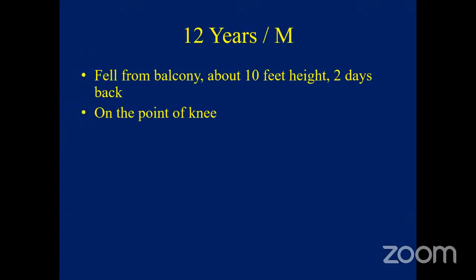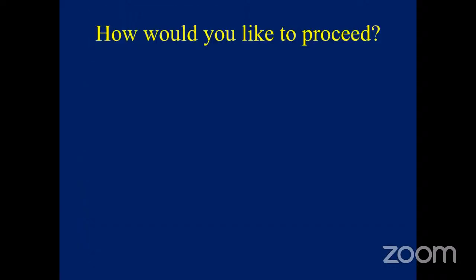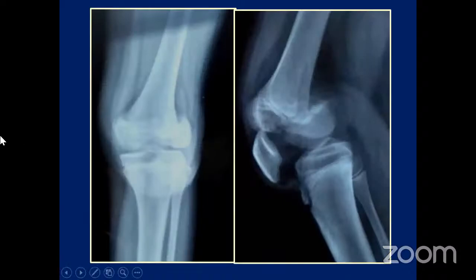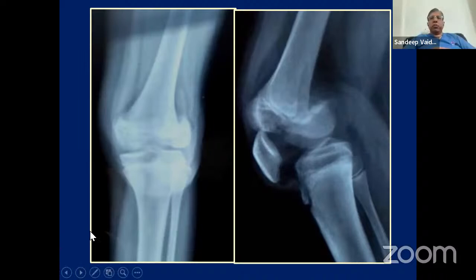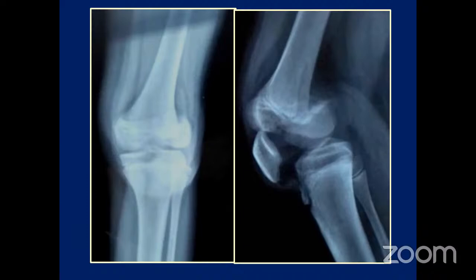We have a 12-year-old boy who fell from a balcony from a height of about 10 feet two days back. The presenting symptoms were swelling along the knee, effusion, multiple superficial abrasions, and there was no distal neurovascular deficiency. We performed X-rays and this is what we saw. This looks like an intra-articular fracture - probably a bicondylar or Hoffa fracture on the X-ray, but I would like to get further imaging. CT scan would be appropriate, and neurovascular status was intact.